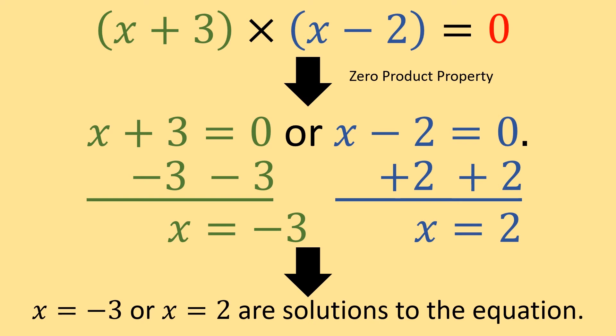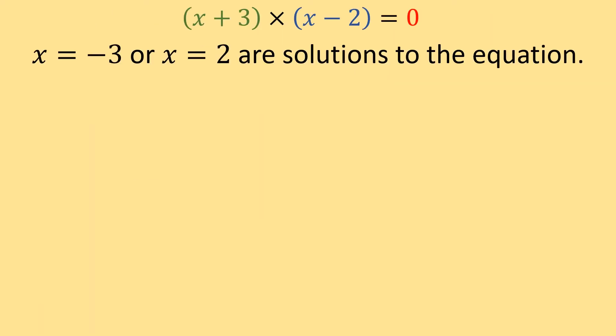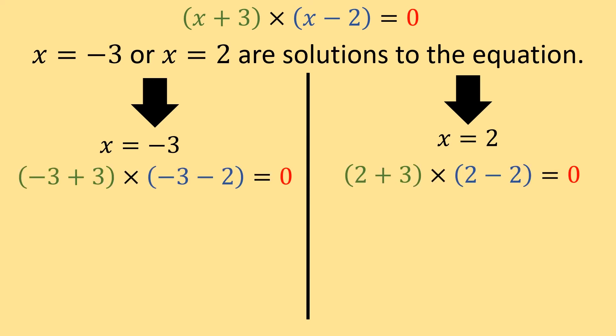This tells us that x equals negative three, and x equals two are solutions to our equation. And remember, you can always check your solutions by plugging them back into the equation and verifying that zero equals zero.